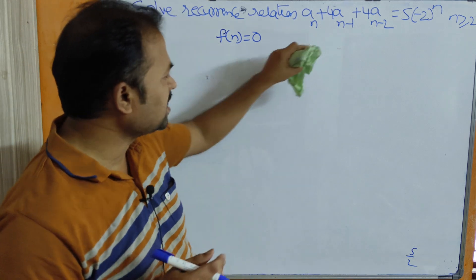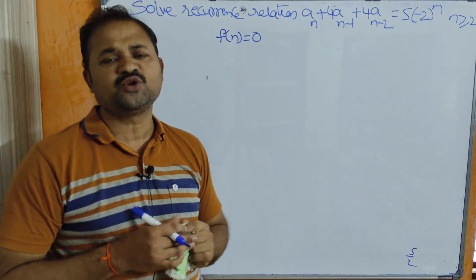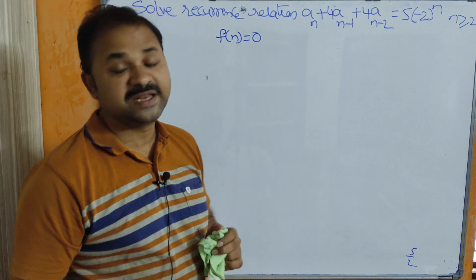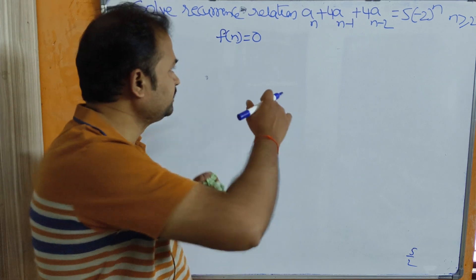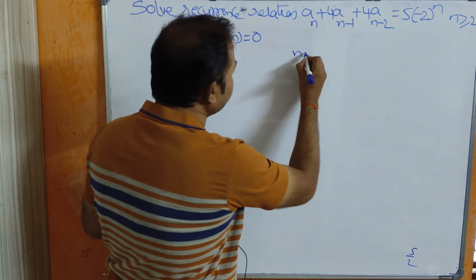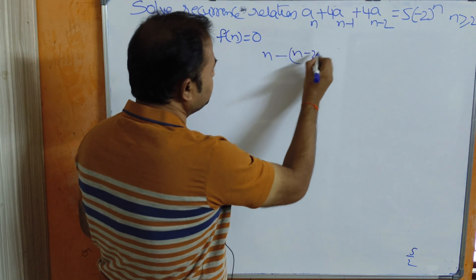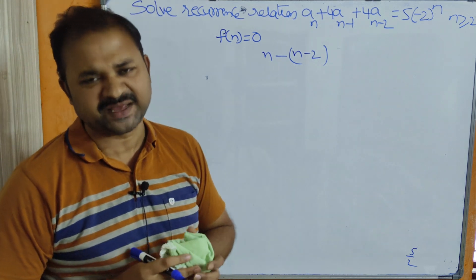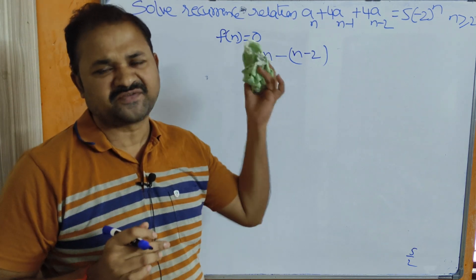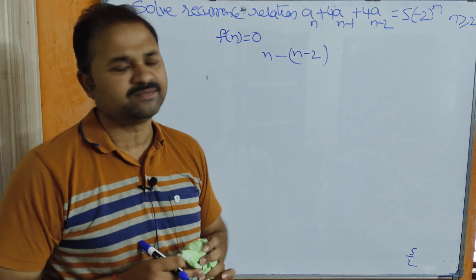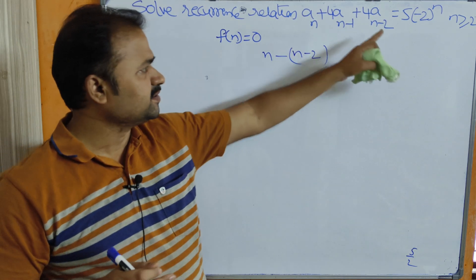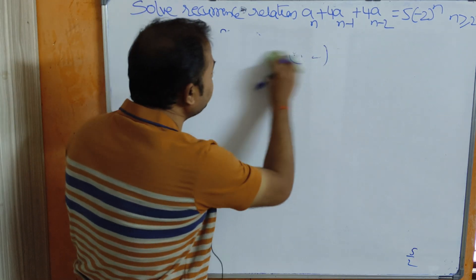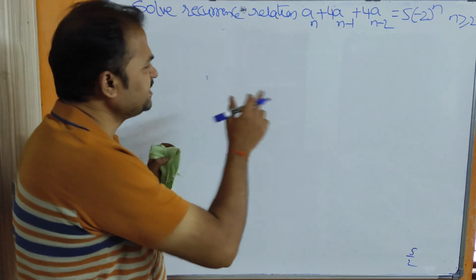Let us find out the order of this recurrence relation. To identify the order we subtract the minimum value from the maximum value. Here the minimum value is n-2 and the maximum value is n, so n minus (n-2) equals 2. This is a second-order non-homogeneous recurrence relation.